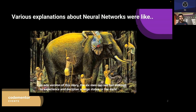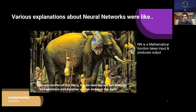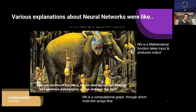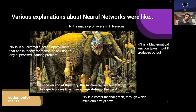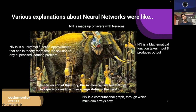The reason I recollected that story is because of the various explanations about neural networks. In that story, whatever they described is true, but where they went wrong is they couldn't see the large statue with visual explanation because they were blind. Similarly, various resources explain neural networks differently — someone says it's a mathematical function that takes input and produces output, another explains it as a computational graph, another says it's made up of layers with neurons, and another calls it a universal approximation function that can represent the solution to any supervised learning problem. As a beginner, any neural network explanation feels like it's lacking something — and that something is nothing but a visual explanation.